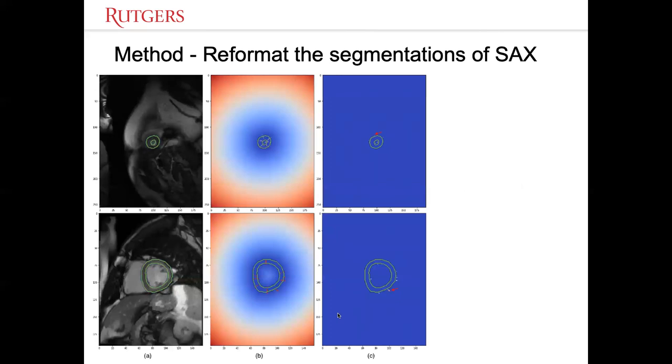Here, the sample images show the multi-channel input format and the calculation of the intersection distance error. The first column shows the slice of the original MR image and associated segmentation of the left ventricle myocardium. The second column shows conversion of the short axis segmentation.